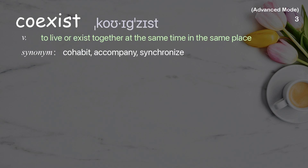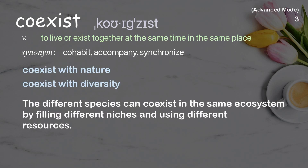Coexist: To live or exist together at the same time in the same place. Examples: coexist with nature, coexist with diversity. The different species can coexist in the same ecosystem by filling different niches and using different resources.